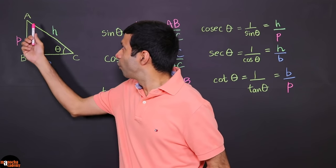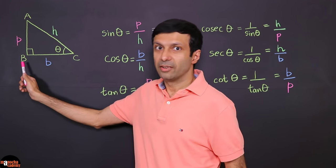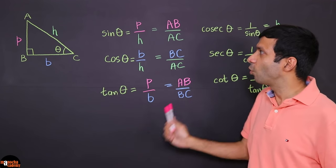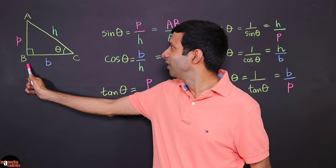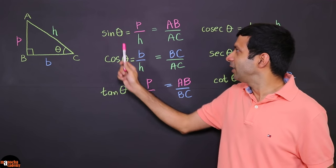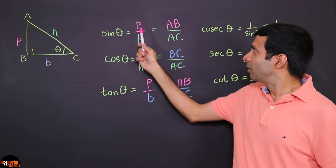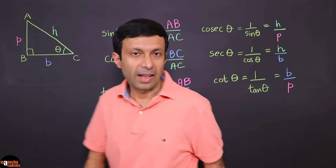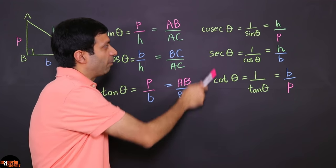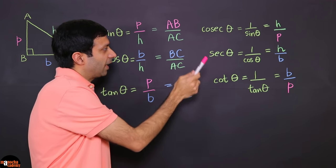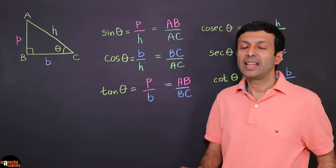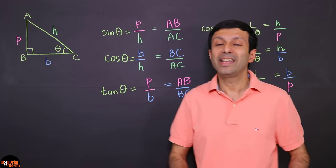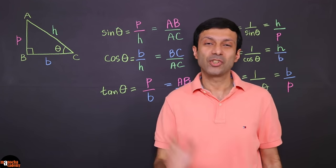For a right angle triangle, the right angle is really important in trigonometry because we can define these ratios only when you have a right angle triangle. We define the basic ratios: sine theta = perpendicular by hypotenuse, cos theta = base by hypotenuse, and tan theta = perpendicular by base. And then we have the reciprocals: cosec theta, sec theta, and cot theta.